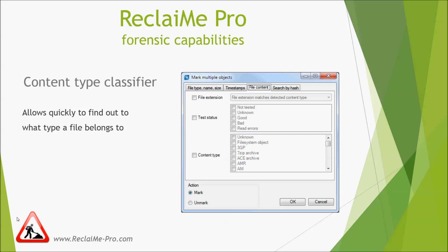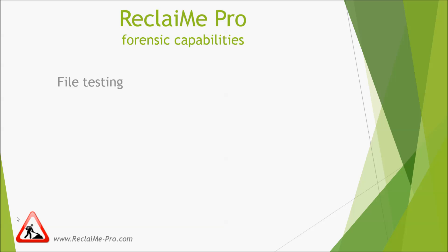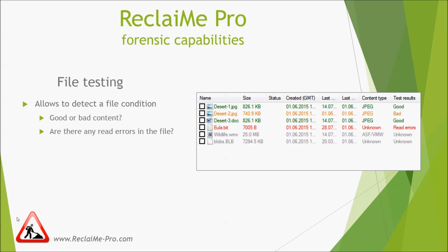The third new feature in Reclaiming Pro is file testing. File testing is more detailed file analysis, which is done to detect a file's condition — whether a file is good or bad, whether it contains bad sectors — and also to detect the quality of the recovery. Although the file testing feature in our in-house tests showed fairly stable and reliable results, you should not rely entirely on it.